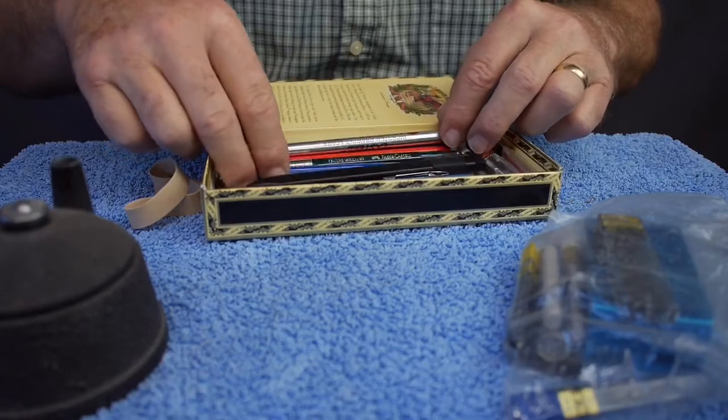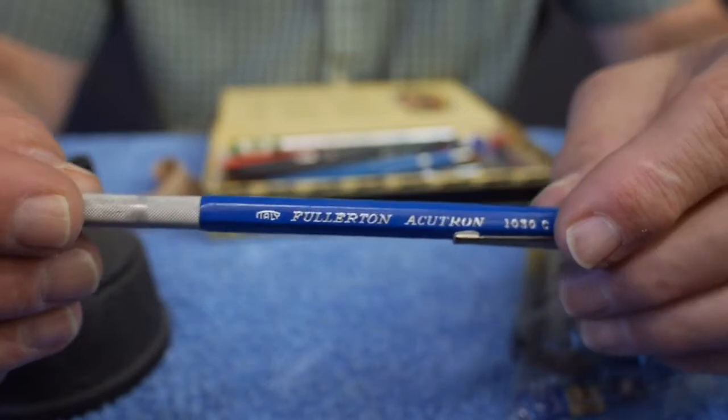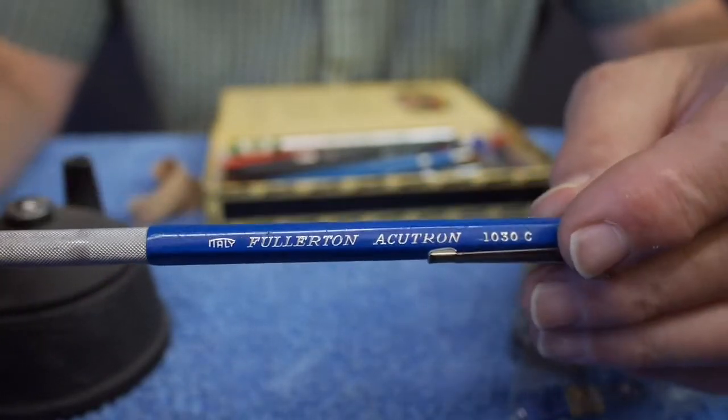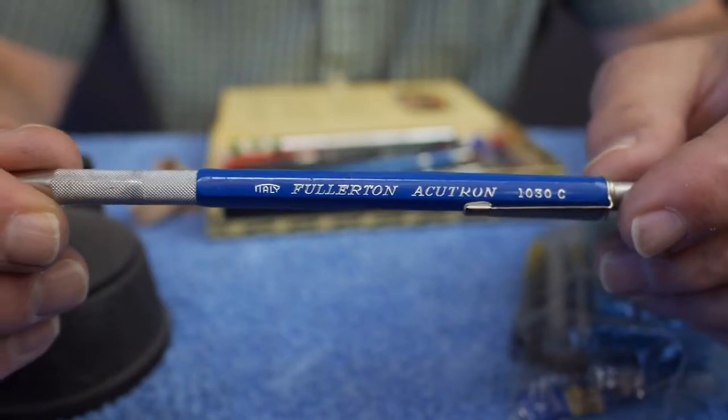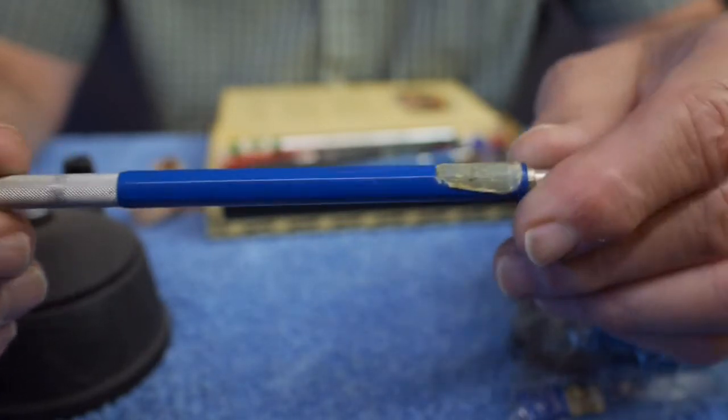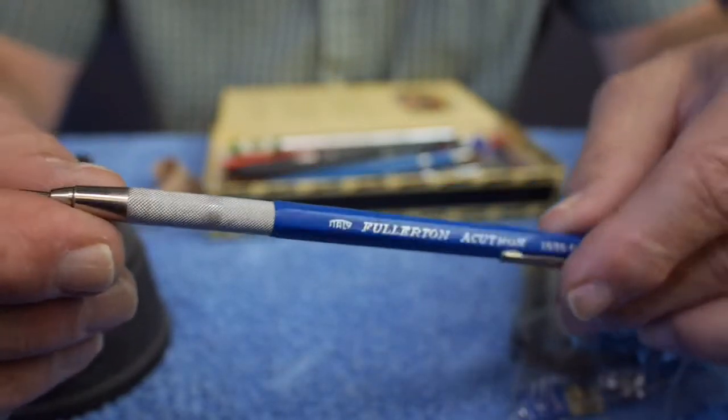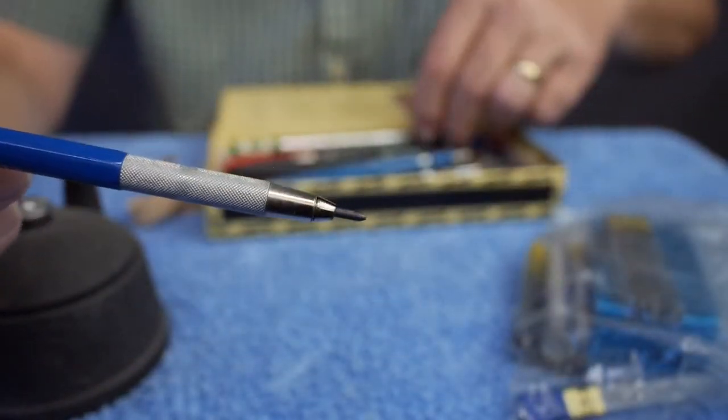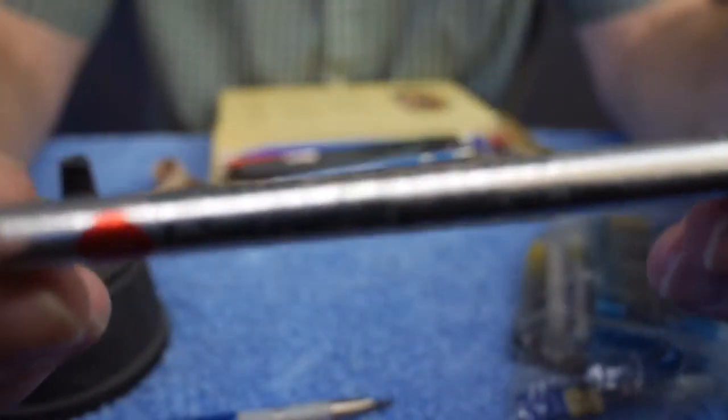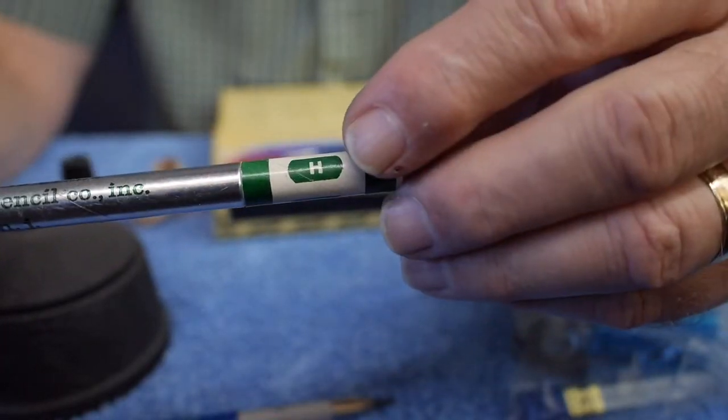Let's dig in here. So this Fullerton Accutron 1030C was one of the mechanical pencils that I started using in high school. I was taking drafting class and my folks went to the flea market in Albuquerque and they bought me a drafting set that included several of these pencils. These are actually lead holders. They use these drafting leads that come in a little tube and there's different hardnesses. This is H.